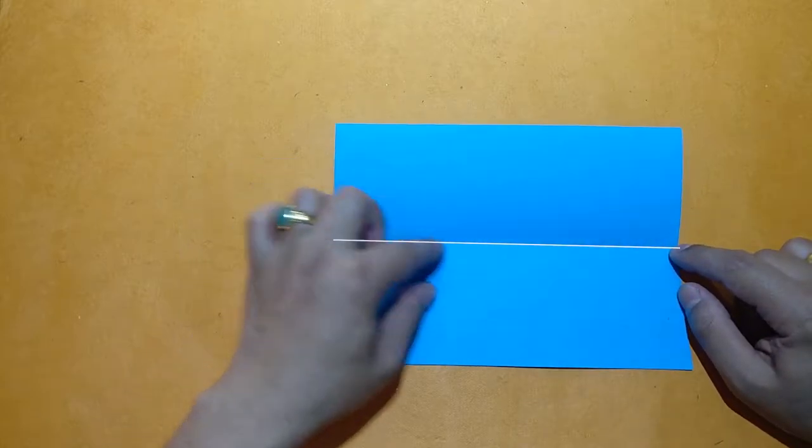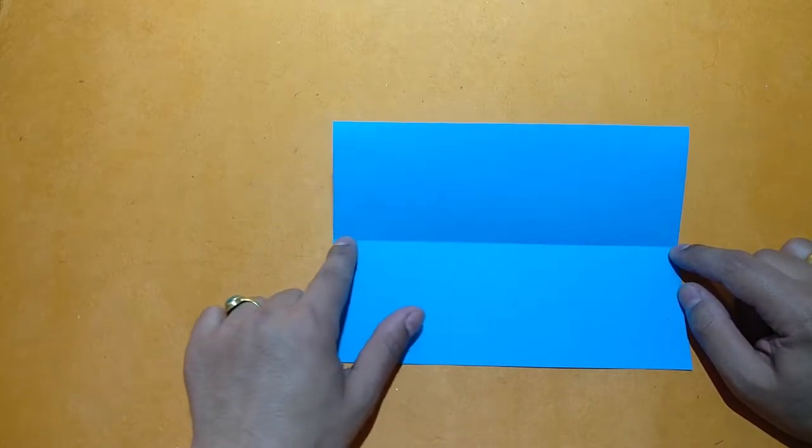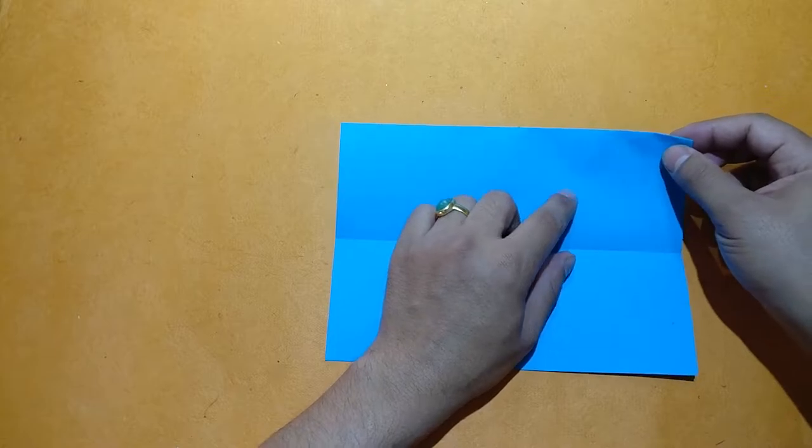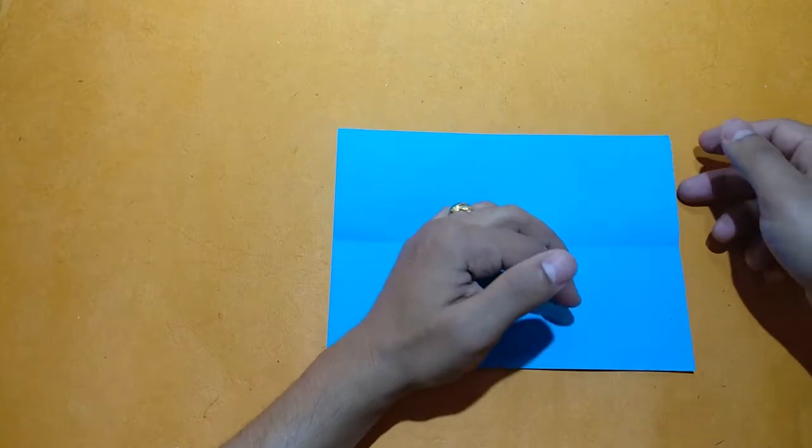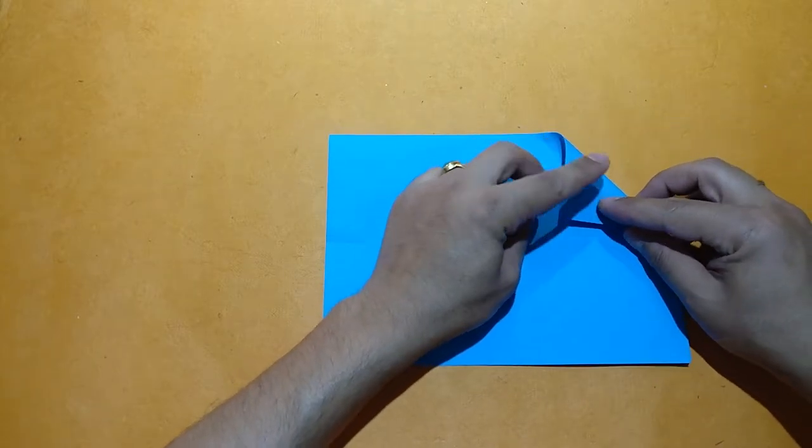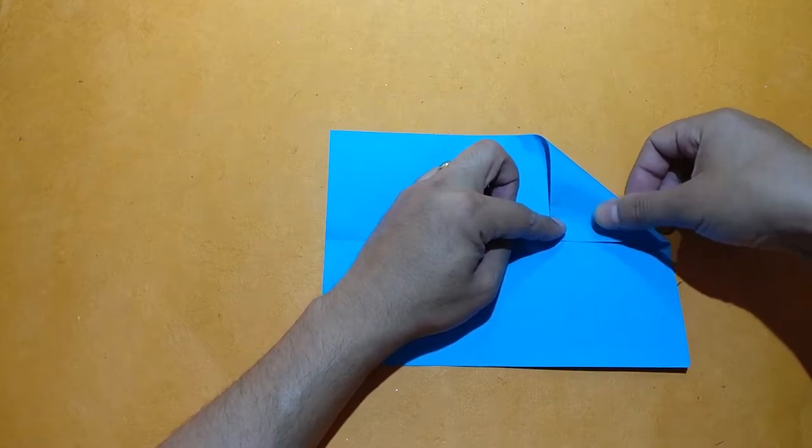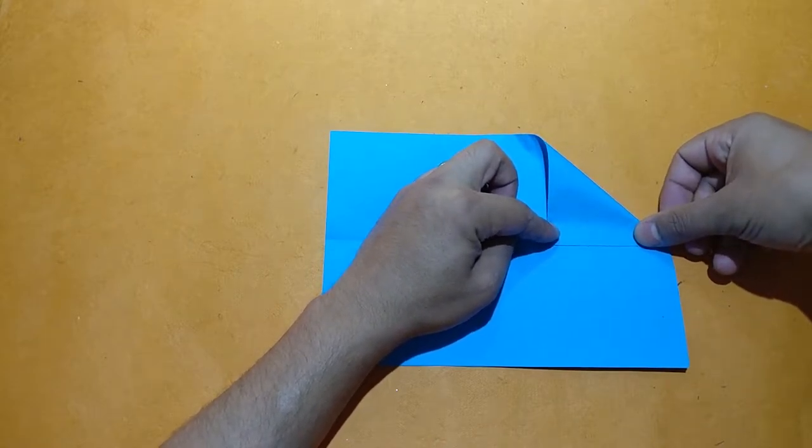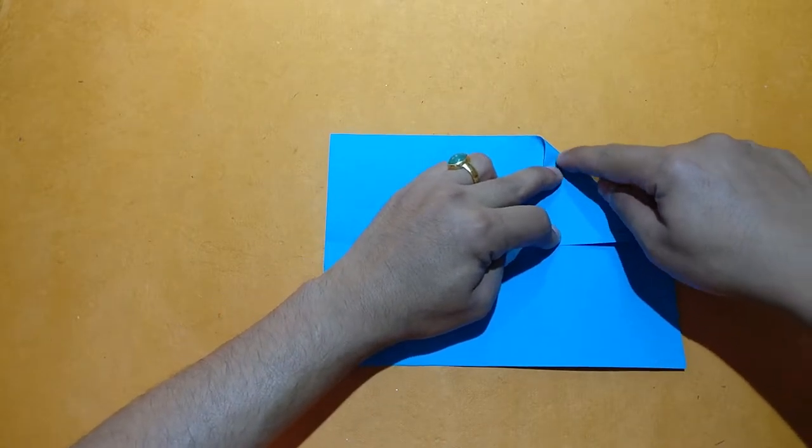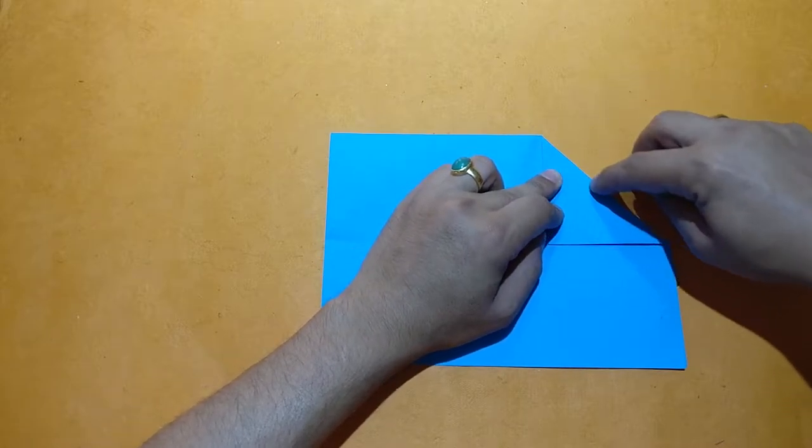Like this, take the top right corner and fold it into the triangle. Align it with the triangle line.